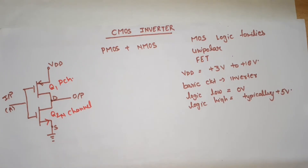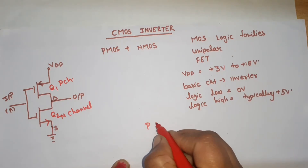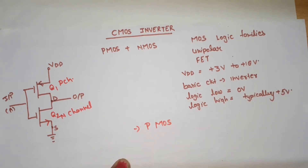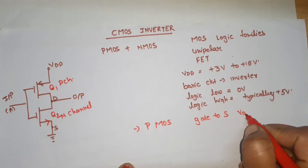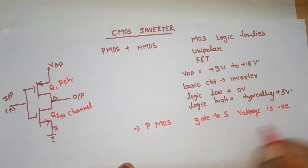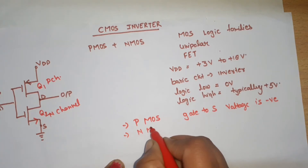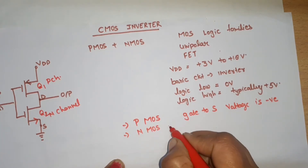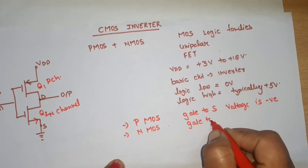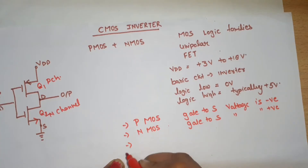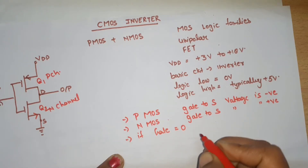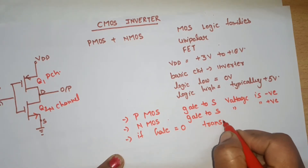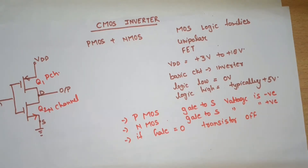Before starting the operation of this circuit, I will tell you the conduction conditions. PMOS will conduct when the gate-to-source voltage is negative. In the case of NMOS, it is the opposite — NMOS conducts when gate-to-source voltage is positive. If the gate voltage is equal to zero, the transistor will be off.